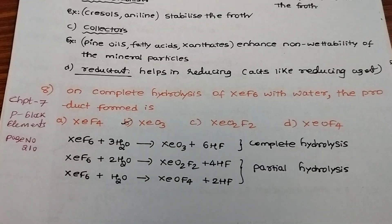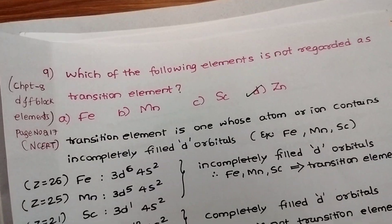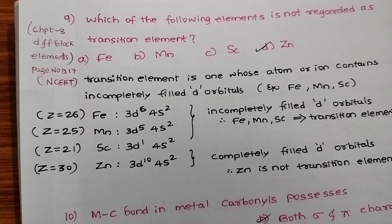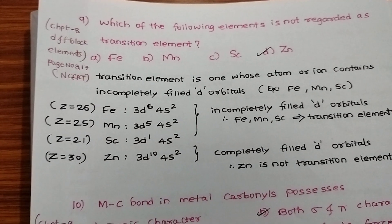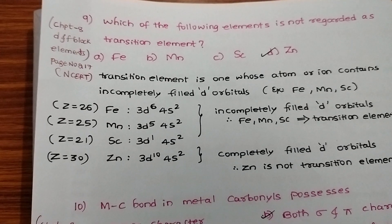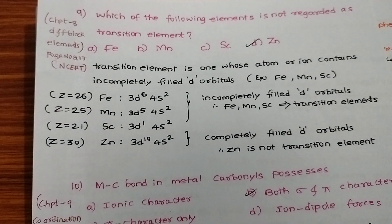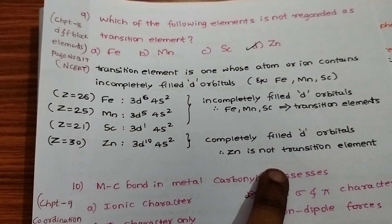Next question: which of the following elements is not regarded as a transition element? First, you need to know what is a transition element. Transition element is one whose atom or ion contains incompletely filled d orbitals.